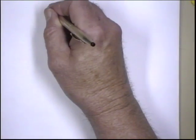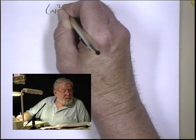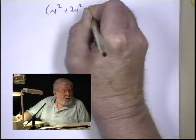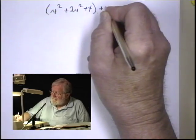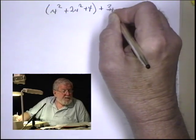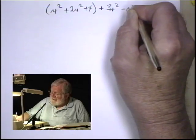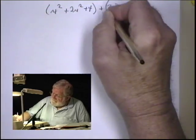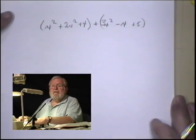Let's add another one here. Let's do x squared plus 2x squared plus 4 parentheses plus 3x squared minus x plus 5 parentheses. We're going to do this two ways.